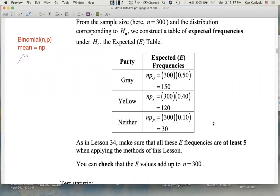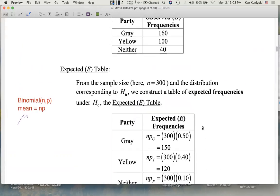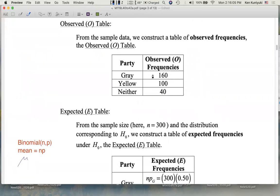Because remember, the null hypothesis says that today, we have 50% Gray, 40% Yellow, 10% Neither. So if those proportions are reflected perfectly in our sample, then we would get exactly these values. This is sort of the ideal for the null.